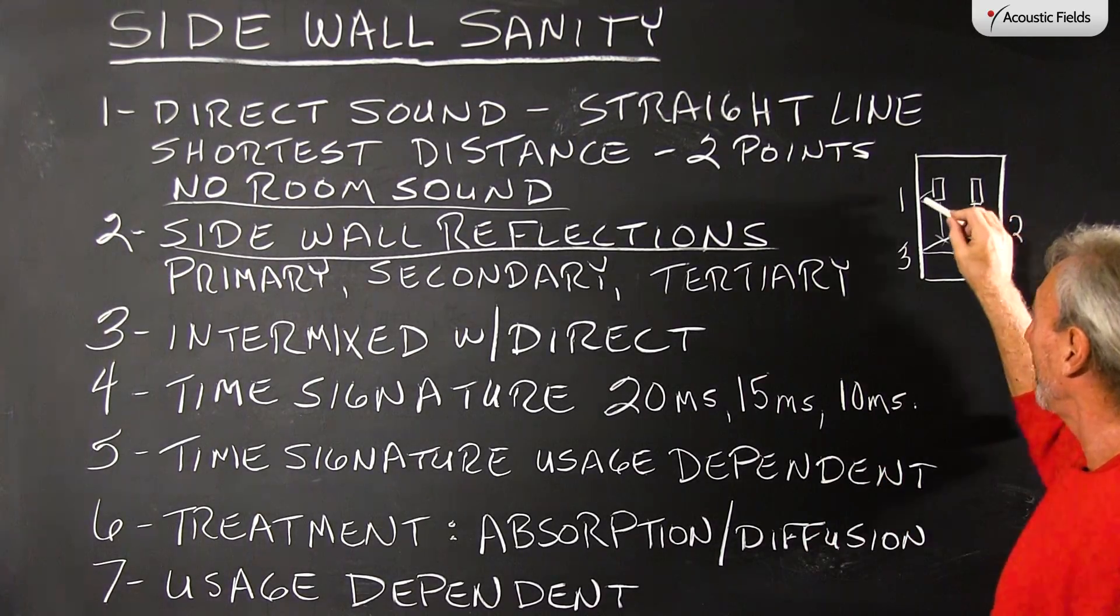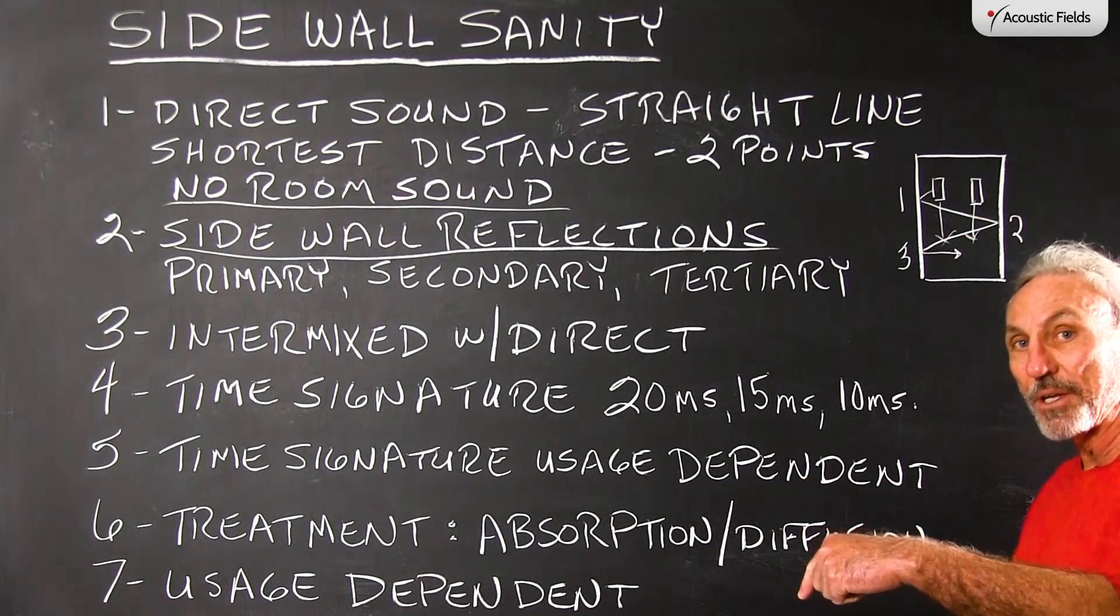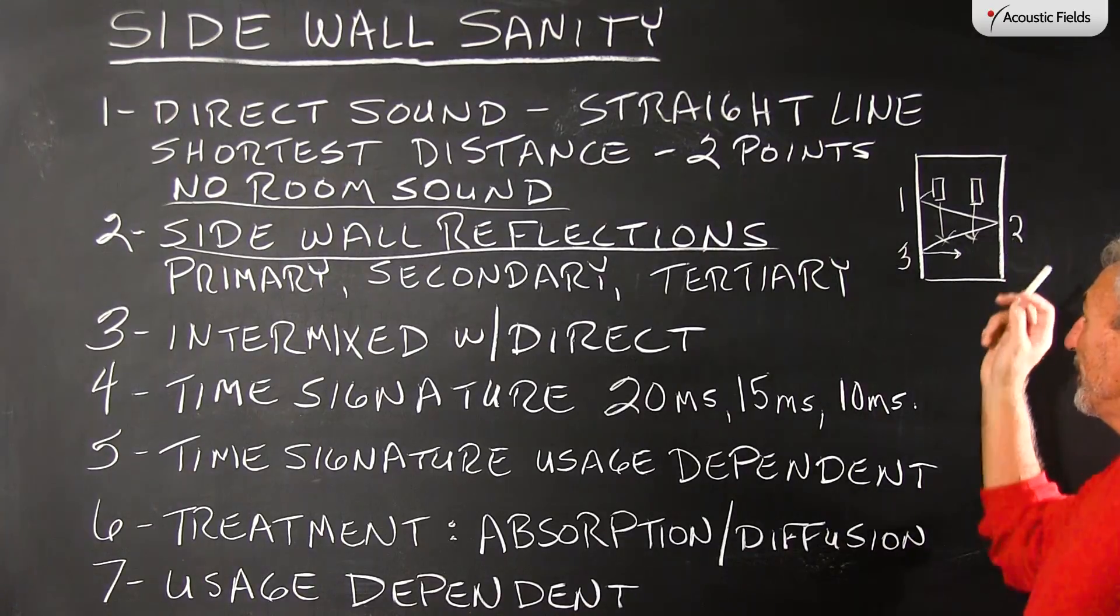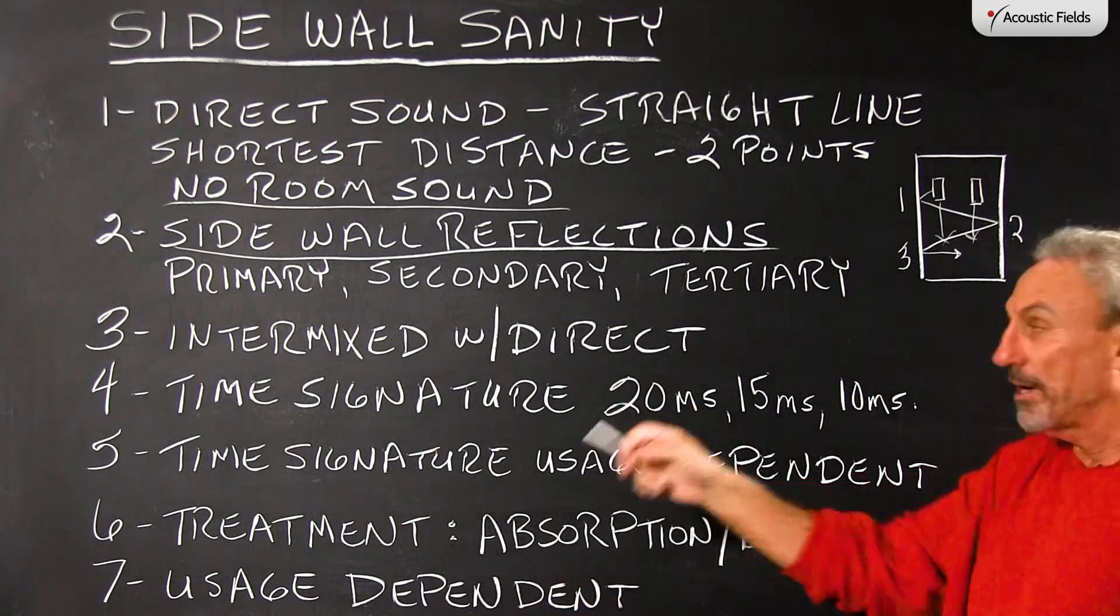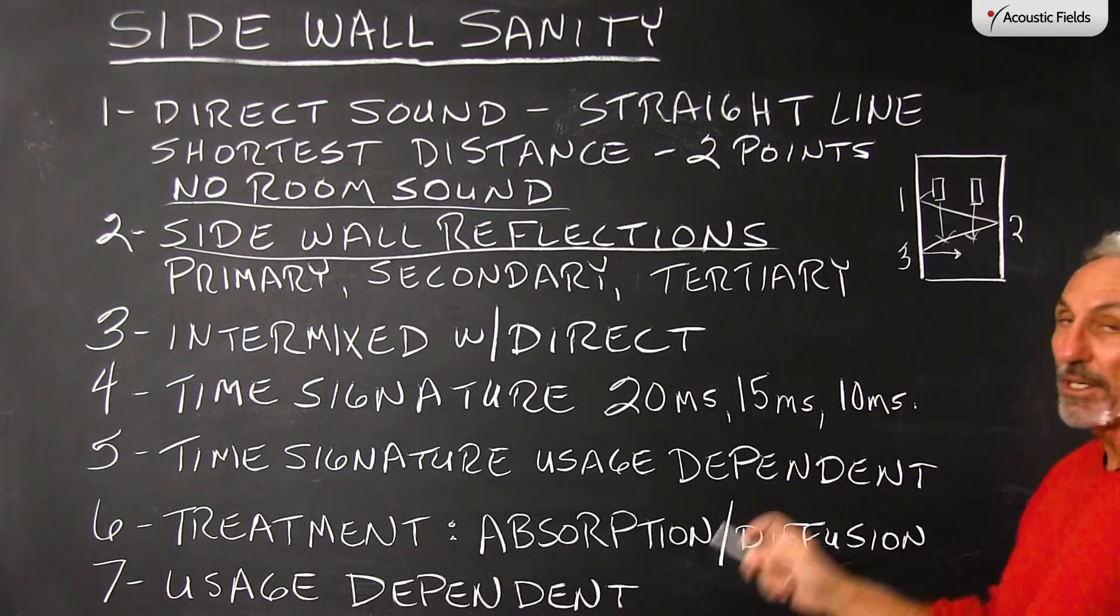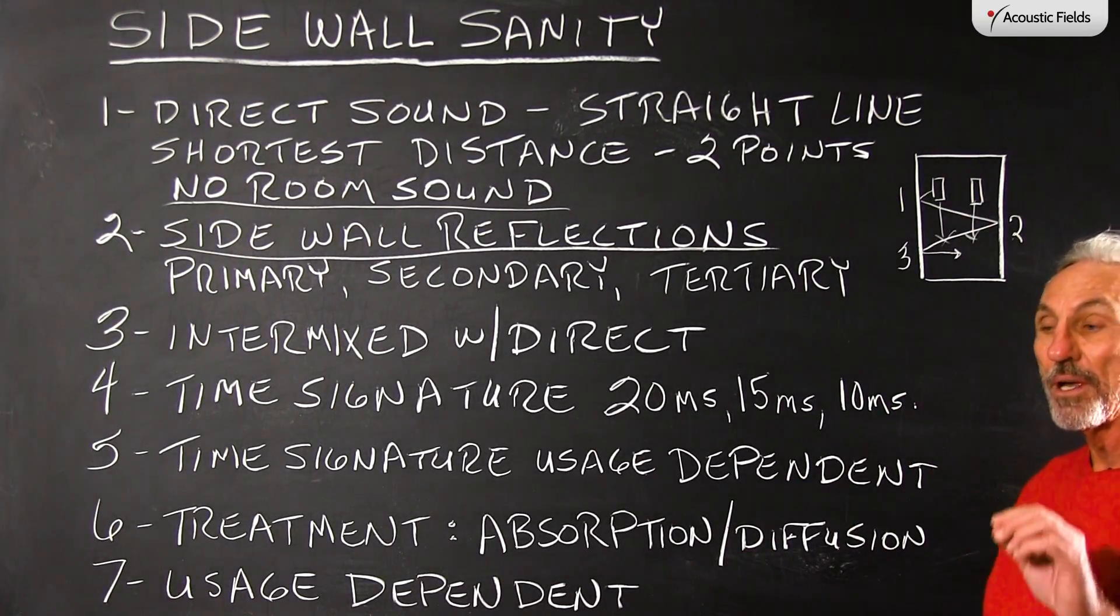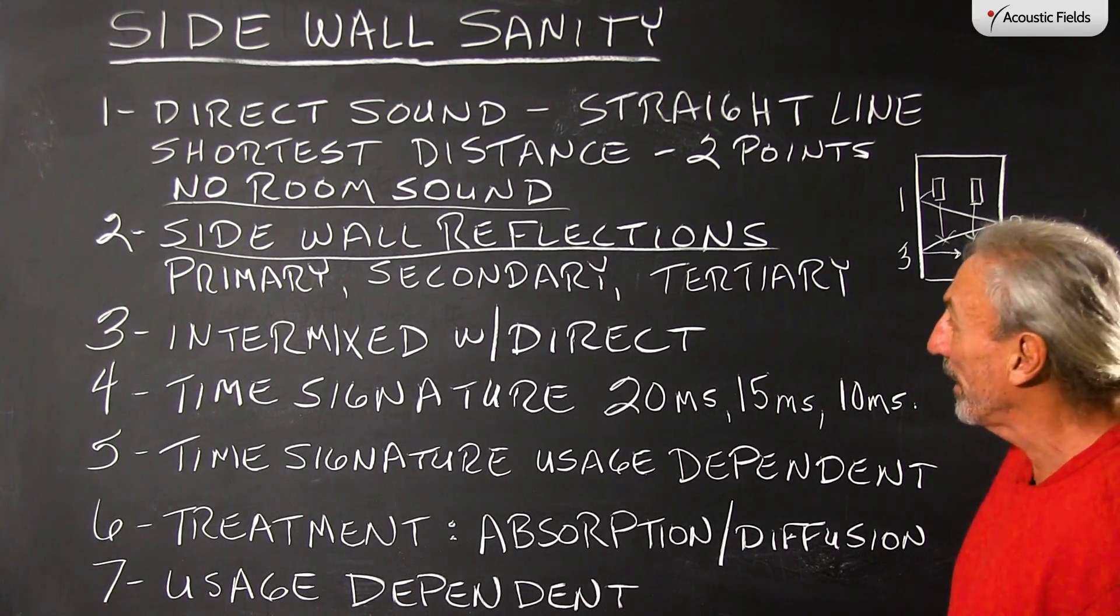That's very important but another very important one is that primary reflection traveling across to the opposite wall. Then it becomes secondary and then the secondary travels across to its originating wall and becomes a tertiary reflection. So it's those three signatures that are very important all created by the sidewall so we have to be very careful with them.